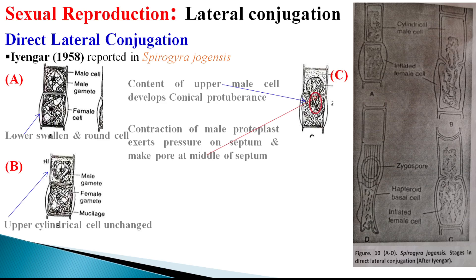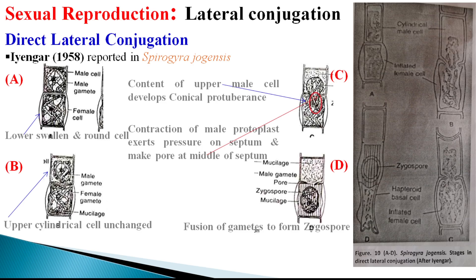Eventually, a pore is made at the middle of the septum through which the male gamete migrates into the female cell. The septum breakage and pore formation are key factors for gamete fusion. The male and female gametes fuse within the female cell only, which is then converted into a zygospore. This is how direct lateral conjugation is completed through zygospore formation.